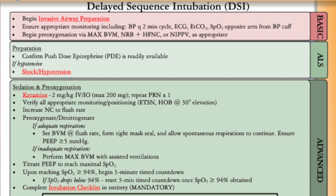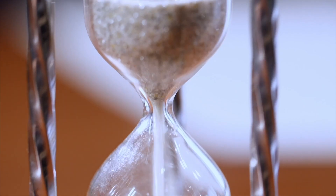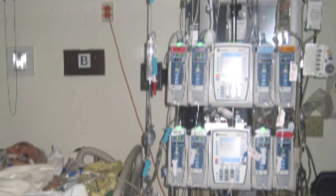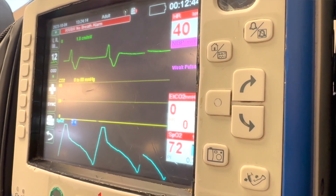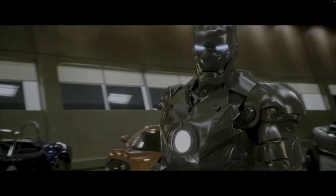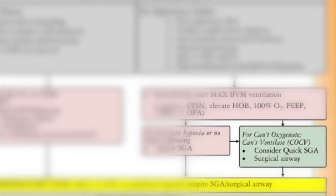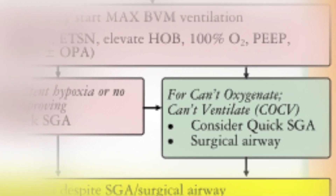We are introducing this protocol in conjunction with the Delayed Sequence Intubation, or DSI, protocol. If you haven't watched that video, please pause and go watch that first, because it helps put this one into context. This protocol is intended for patients we either don't have time to intubate with DSI, we can't achieve the physiologic preparation needed to proceed with DSI, or for whom DSI is not appropriate. In these cases, RSA will be the primary approach to invasive airway management. This is essentially an enhanced version of the Quick King or Quick SGA concept we had in our old drug-assisted airway protocol.